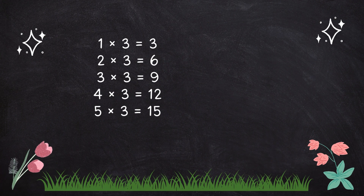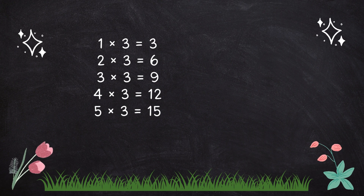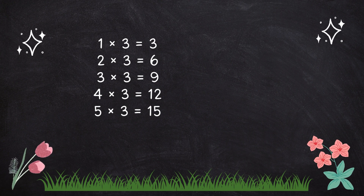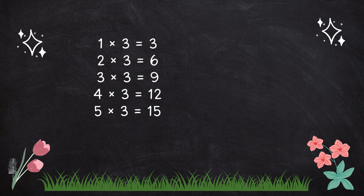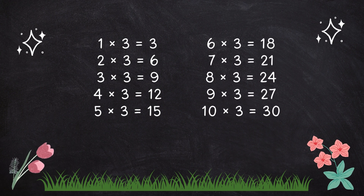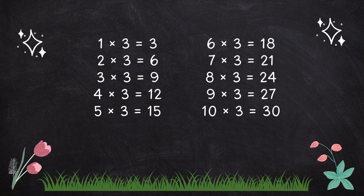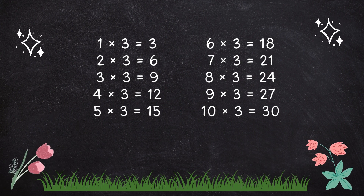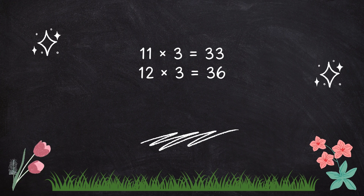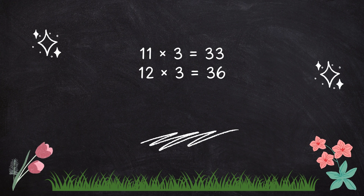1 x 3 is 3. 2 x 3 is 6. 3 x 3 is 9. 4 x 3 is 12. 5 x 3 is 15. 6 x 3 is 18. 7 x 3 is 21. 8 x 3 is 24. 9 x 3 is 27. 10 x 3 is 30. 11 x 3 is 33. 12 x 3 is 36.